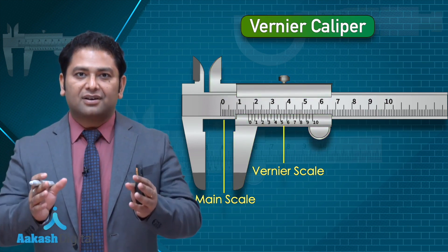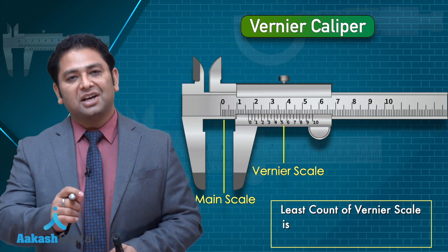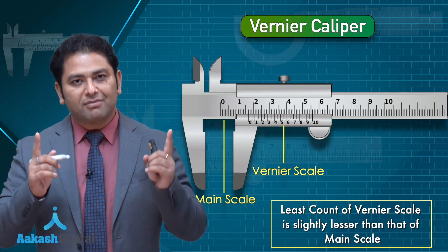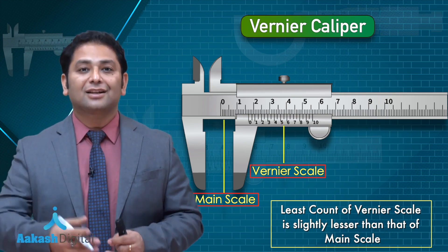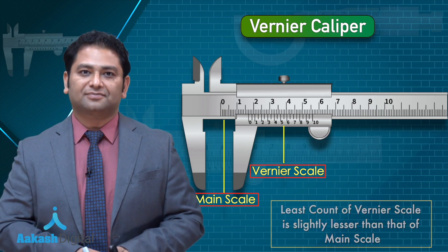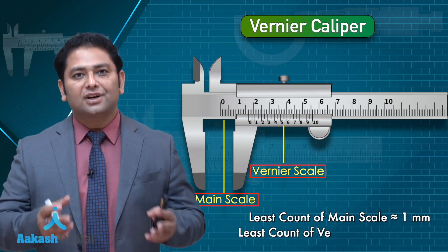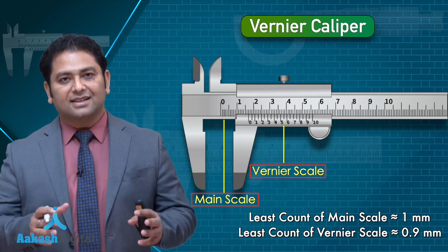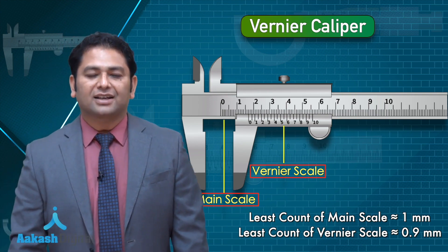The clever design of this device lies in the fact that the least count of the Vernier scale is slightly lesser than that of main scale. To make you careful on this point: the combination of main scale and Vernier scale makes the Vernier caliper. Saying Vernier caliper and saying Vernier scale are entirely two different things. Generally, the least count of the main scale is kept as a millimeter and the least count of the Vernier scale is kept slightly less, something like 0.9 millimeter.